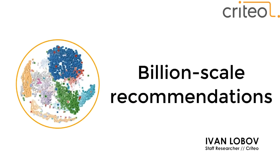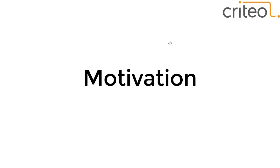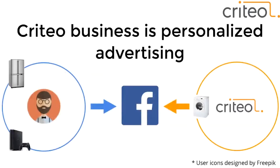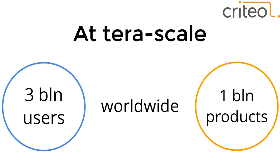This presentation is about one of the approaches we use for recommendations at Criteo. Criteo's business is mostly personalized advertising, which means personalized recommendations play an important role. One of the distinctive aspects of Criteo is that we do this at a huge scale — we have a lot of users and have to recommend a lot of products. We have on the order of a billion products worldwide.